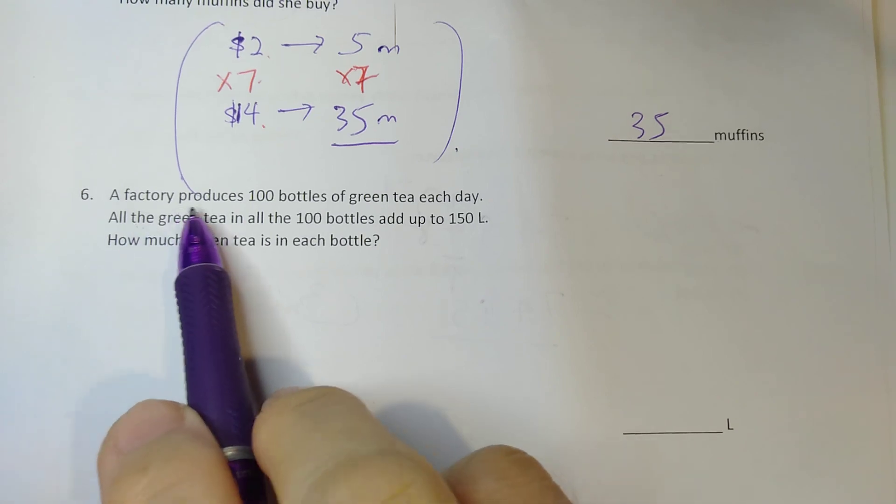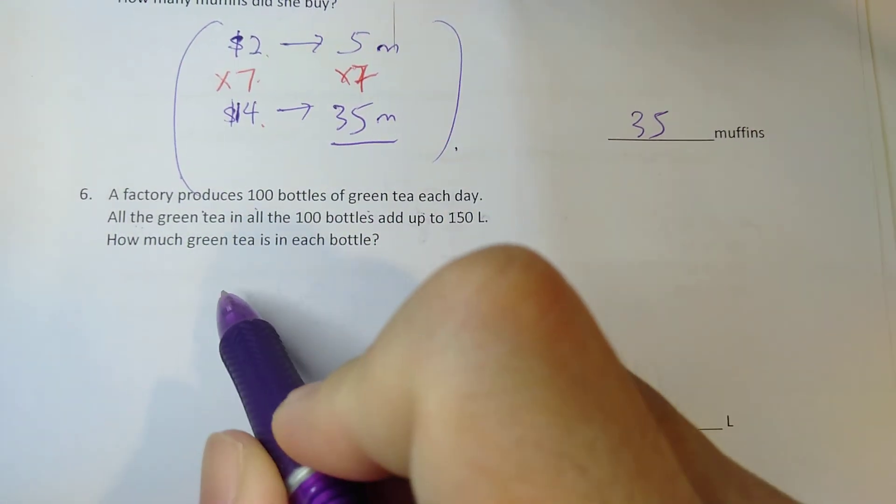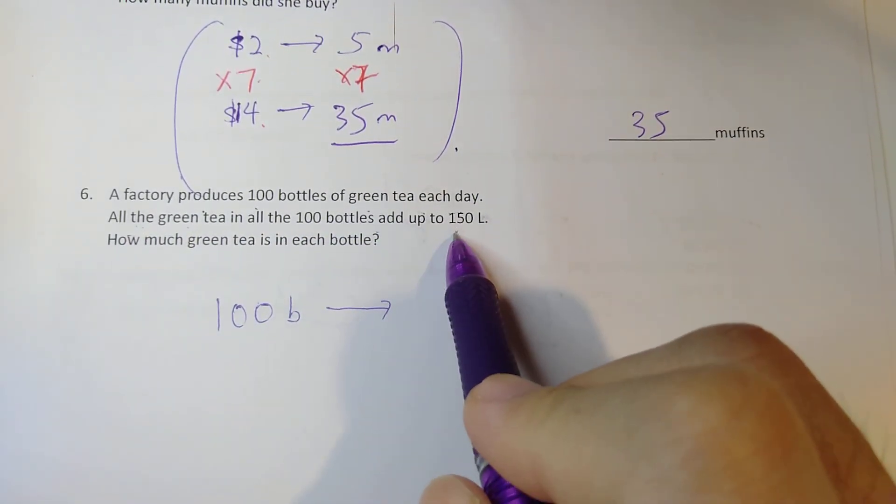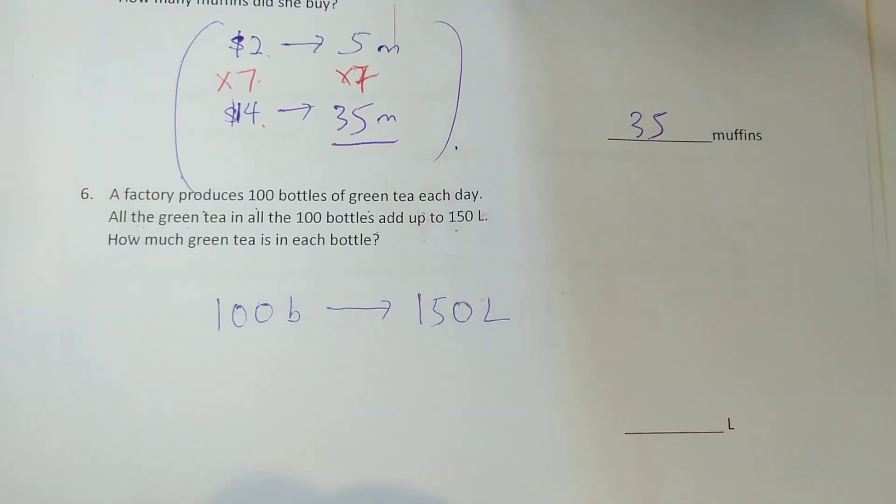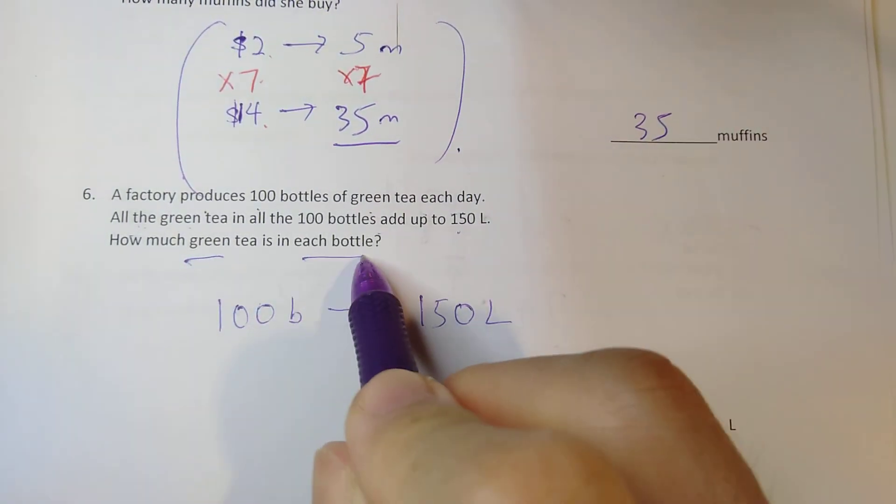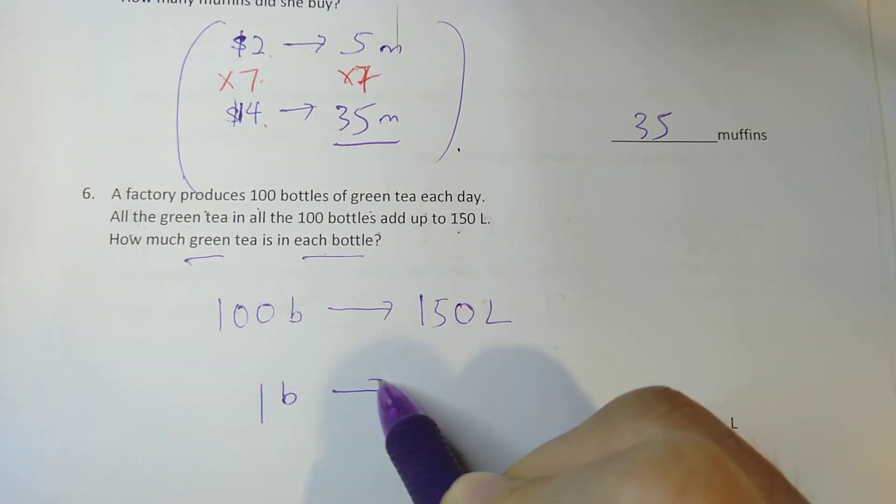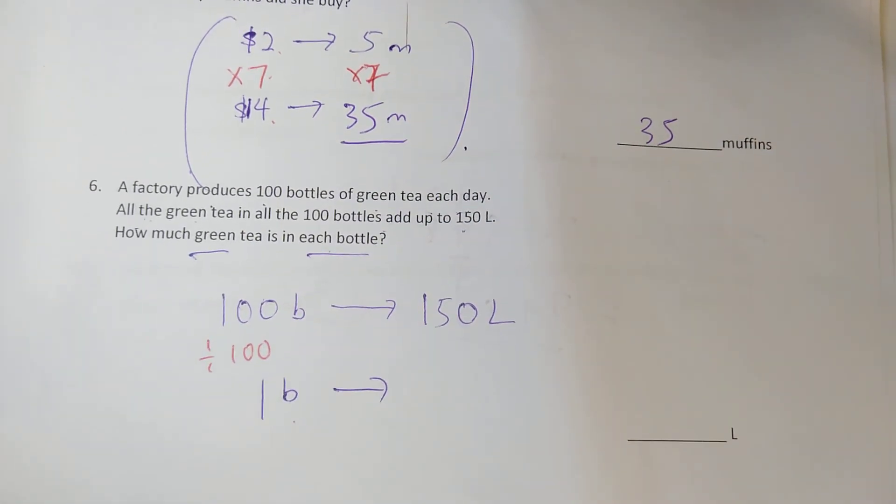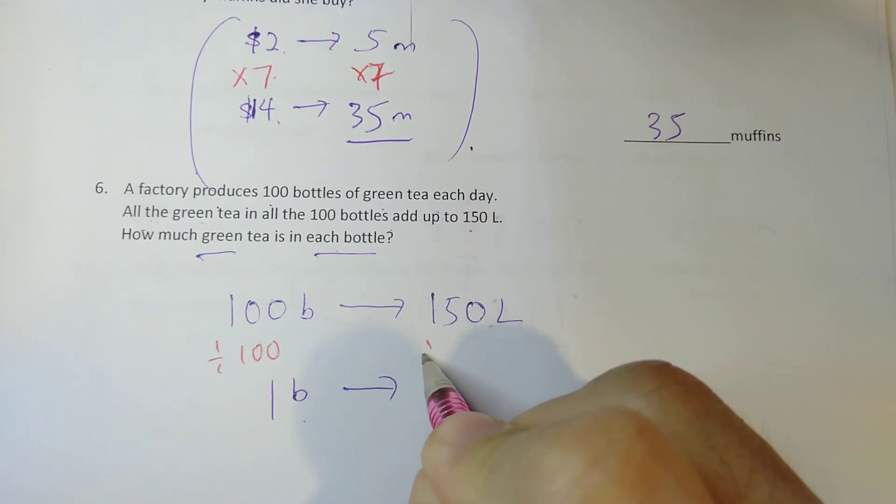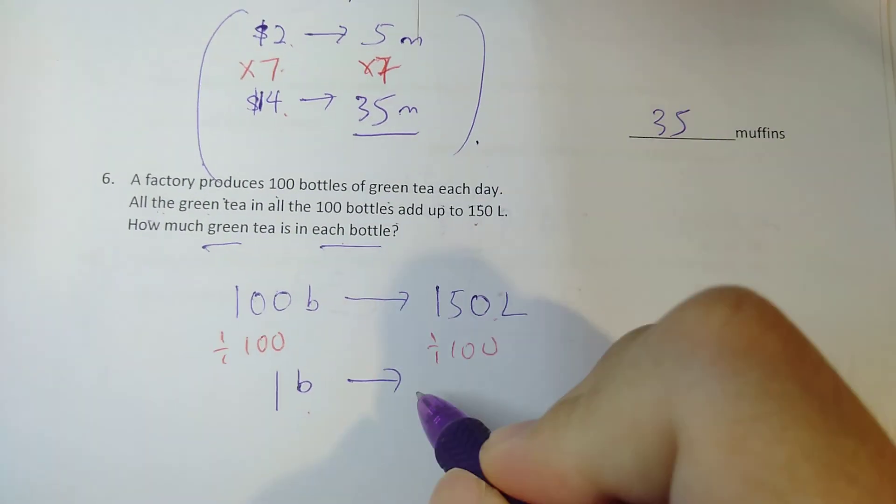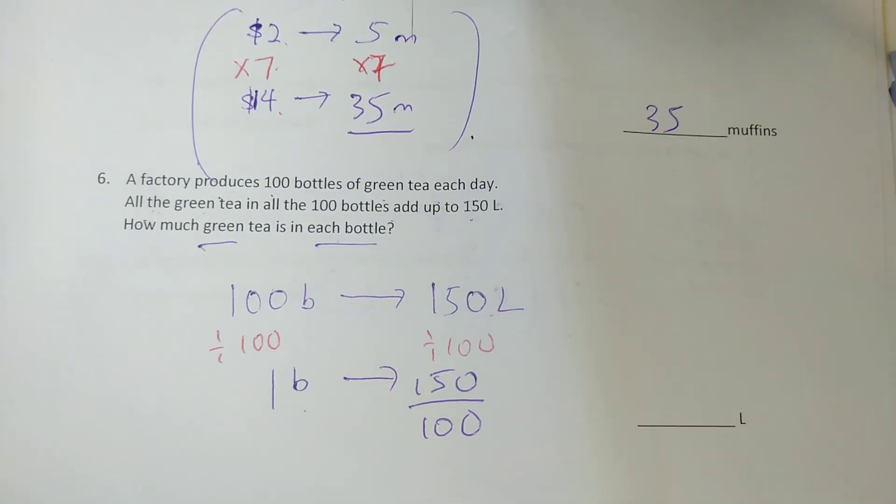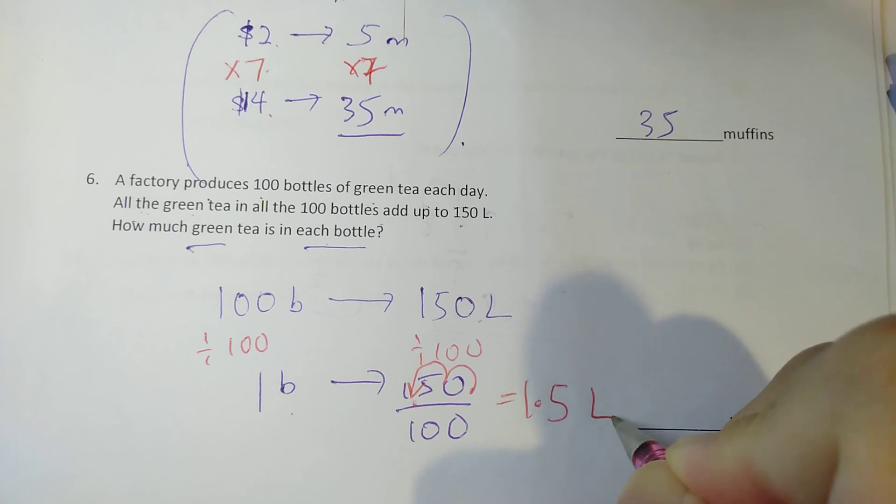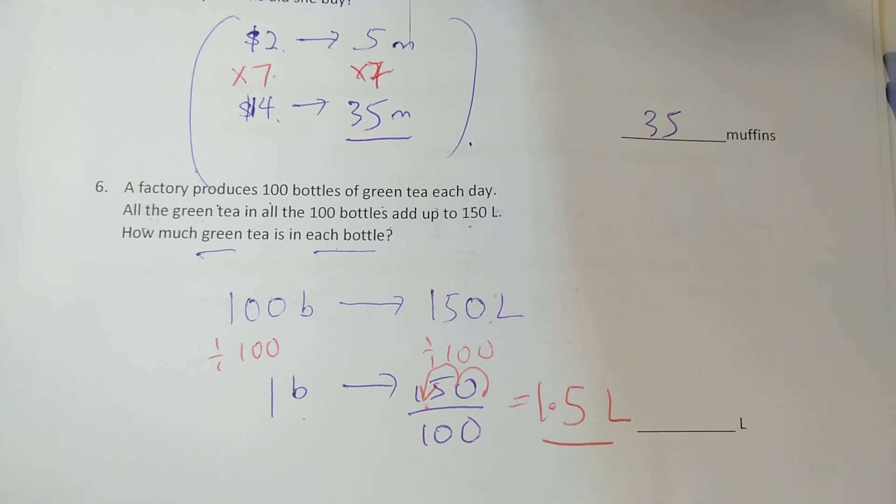Next one, a factory produces 100 bottles of green tea each day. So 100 bottles, all the green tea add up to 150 liters. If I pour them out, they all add up to 150 liters. So how much green tea is in one bottle each bottle? Now how do I get to 1 bottle from 100? I divide by 100, I get 1 bottle. So same thing here, I divide by 100. What does it mean by 150 divided by 100? It just means you move the decimal place. 1, 2. So you get your 1.5 liter. And that's the answer for question 6.